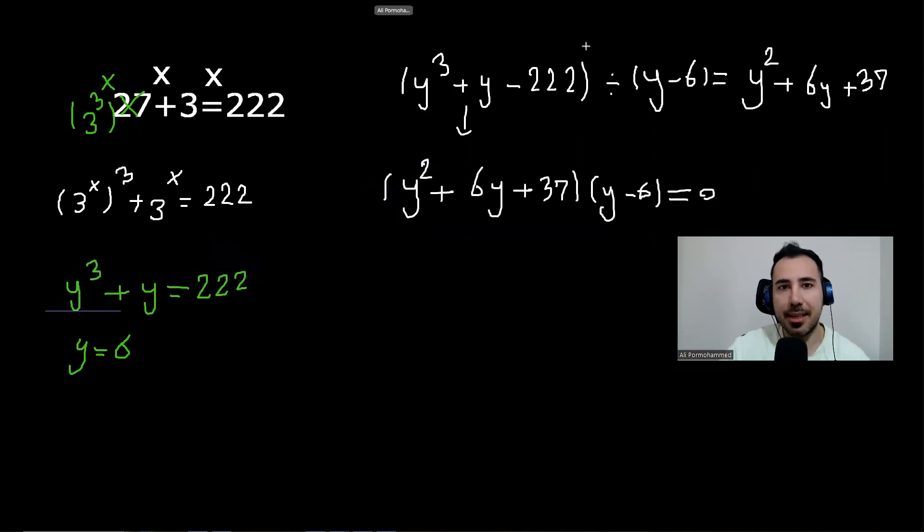We need to see if this one has any more roots. To do that, we know this is going to be B, A is 1, this is C. We check delta: B squared minus 4 times 37. The B part is 6, so 6 squared minus this would be, of course, a negative value. That means there are no more answers here. Only y equals 6 is the answer.